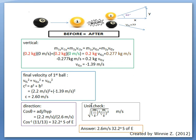Finally, we check for our units. The square root of m per second squared times m per second squared is equal to m per second. And our final answer is 2.6 m per second, 32.2 degrees south of east.